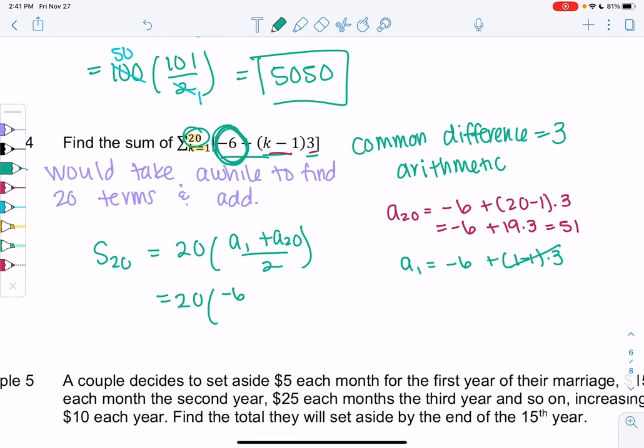And you'll notice that cancels out and we get negative 6 plus 51 over 2. And that'll tell me the sum of the first 20 terms without finding all of the terms. So it's just saving us time.